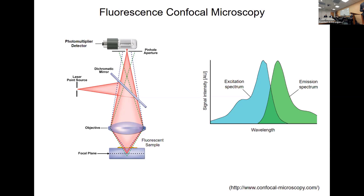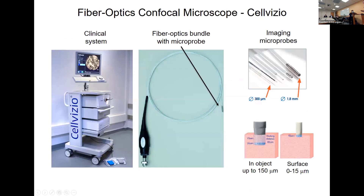The only difference with the clinical system we've used is that between the objective and the dichroic mirror there is a specific fiber — a fiber array, a bundle of fibers — that detaches the systems and allows flexibility to bring the probe to the patient. With standard confocal microscopes, despite being established for decades in the lab, this would not be possible. You've seen this system before — that's the second generation; we had the first generation in the lab as well.